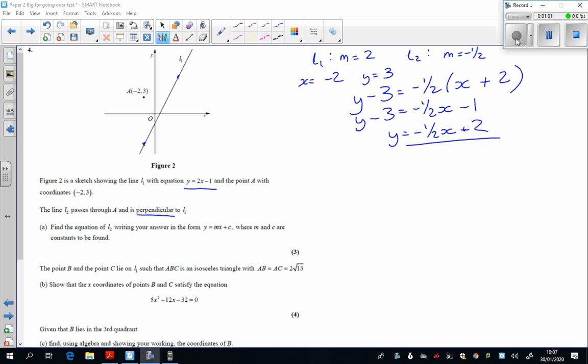So that this is an equilateral triangle. And that we actually know that the distance between them, here to here and here to here, is 2 root 13.